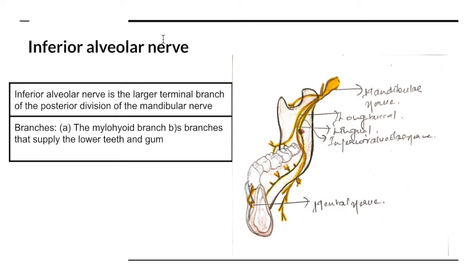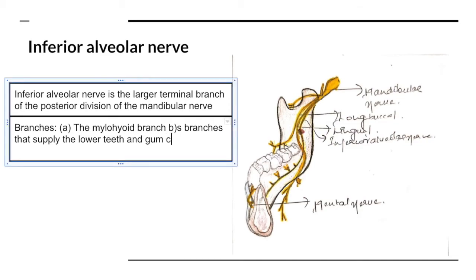Finally, coming to the important inferior alveolar nerve, which is one of the most important nerves concerned with mandibular nerve blocks. The inferior alveolar nerve is the larger terminal branch of the posterior division of the mandibular nerve. It has three parts in its course: as it enters the mandibular foramen, it gives the mylohyoid branch; then as it proceeds towards the canal, it gives branches to supply the lower teeth and the gums; and finally the mental nerve.